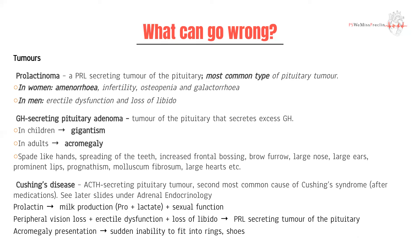Important features of acromegaly include spade-like hands, which are very large hands; spreading of the teeth because of jaw growth; increased frontal bossing due to skull growth; large nose; large ears; a condition called molluscum fibrosum; and you can also have cardiomyopathy and cardiomegaly.